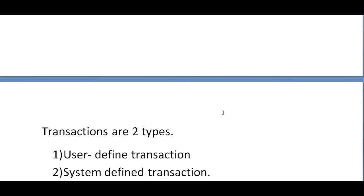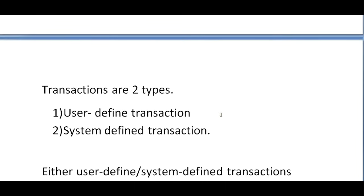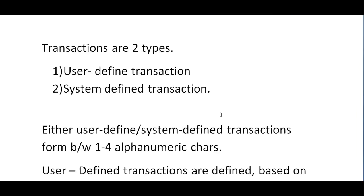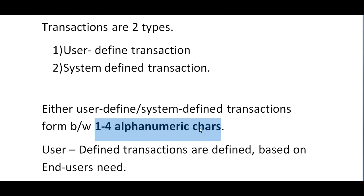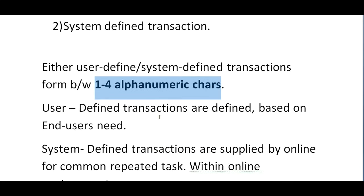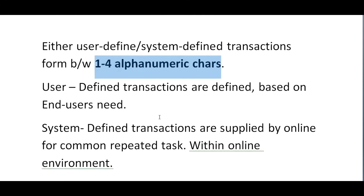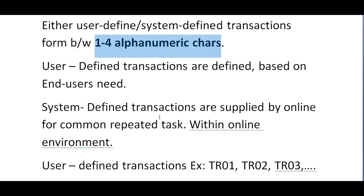Transactions are of two types: user-defined transactions and system-defined transactions. Both form between one to four alphanumeric characters — this is very important. The transaction ID should be one to four alphanumeric characters, and most use four bytes. User-defined transactions are defined based on end-user needs; when we develop any online application we give a transaction ID to them. System-defined transactions are supplied by the online system for common repeated tasks within the online environment.